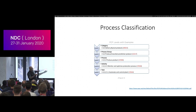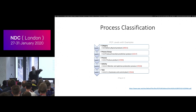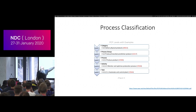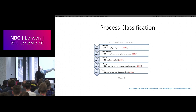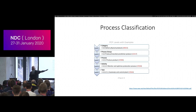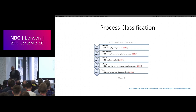APQC — the American Productivity and Quality Center — does a lot around process mapping and defines five levels. Level three is the process, which is the first candidate to think about for microservices. Level four is activities, which you think about when you have a lot of teams. Tasks are below that. They also group processes into process groups and categories, which can be useful for organizational purposes.